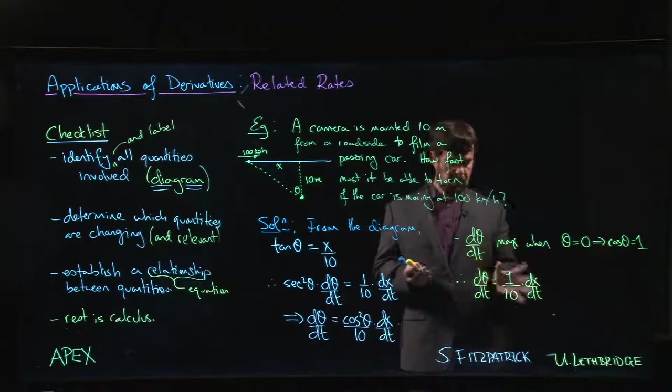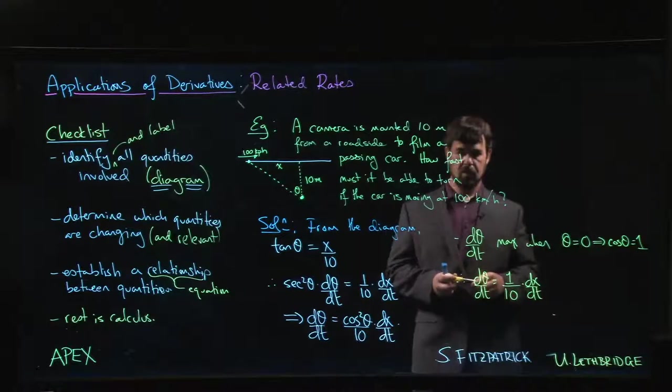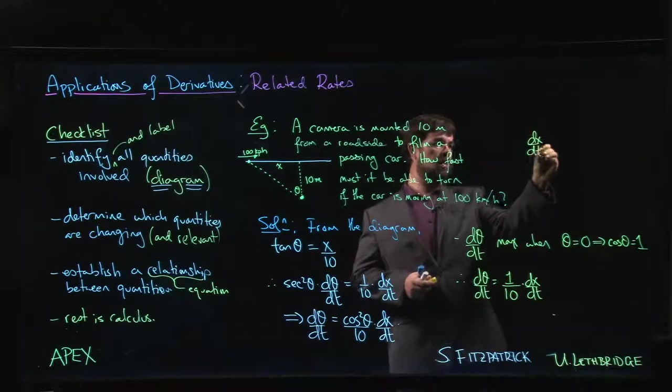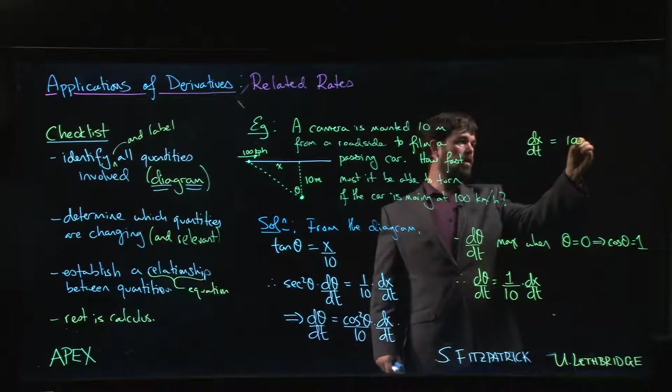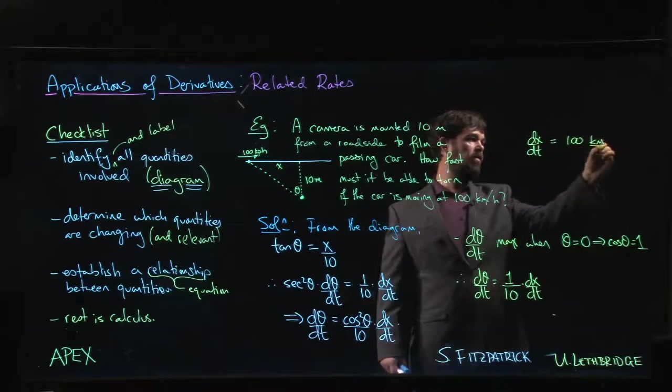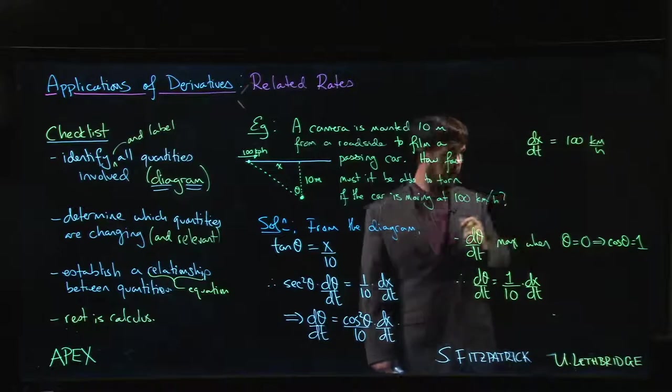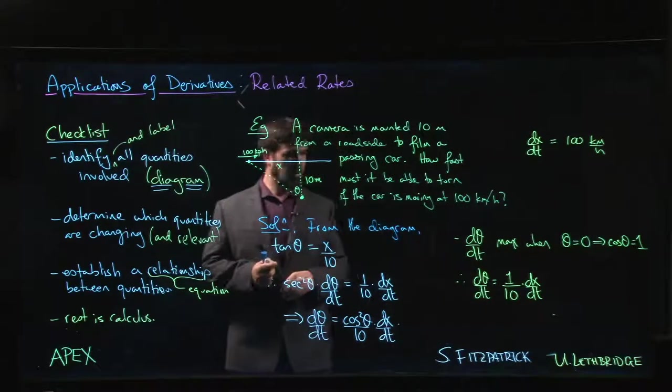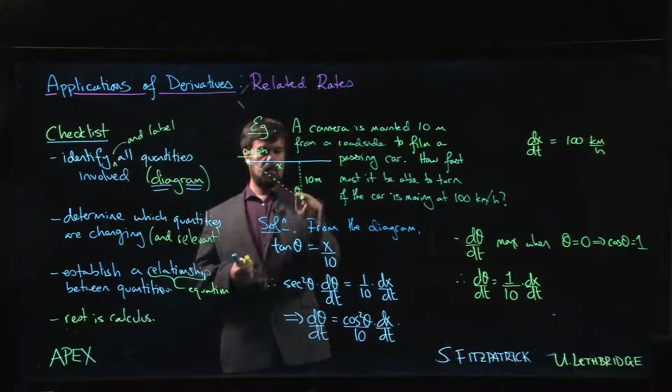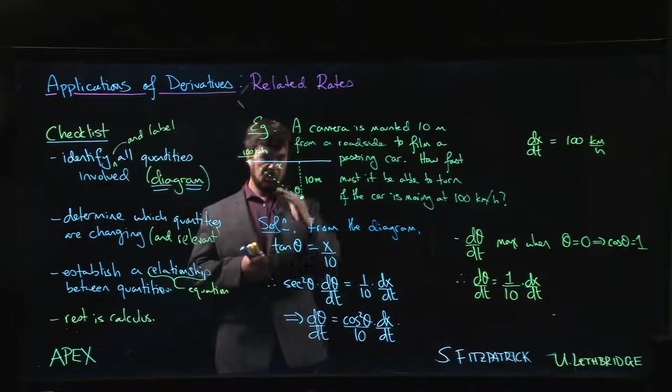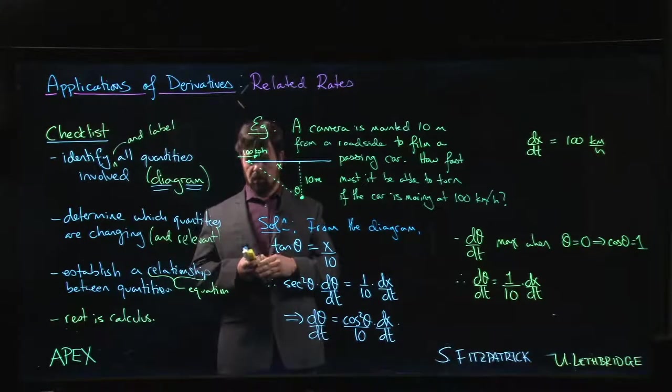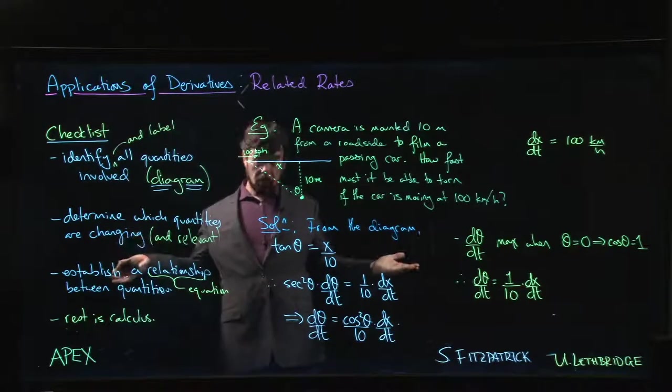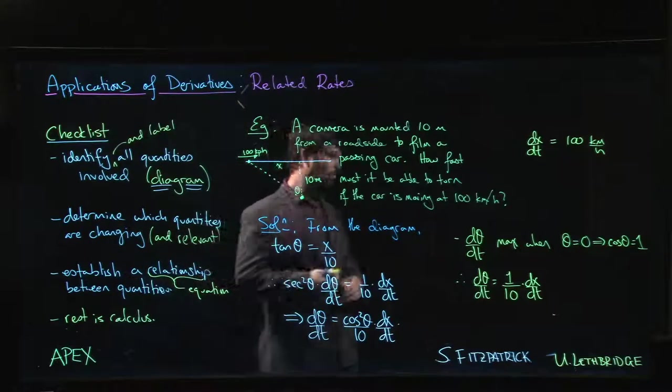How do we want to measure these things? dx/dt is given as 100 kilometers per hour, but we probably want to give the rate at which this thing is turning in radians per second.